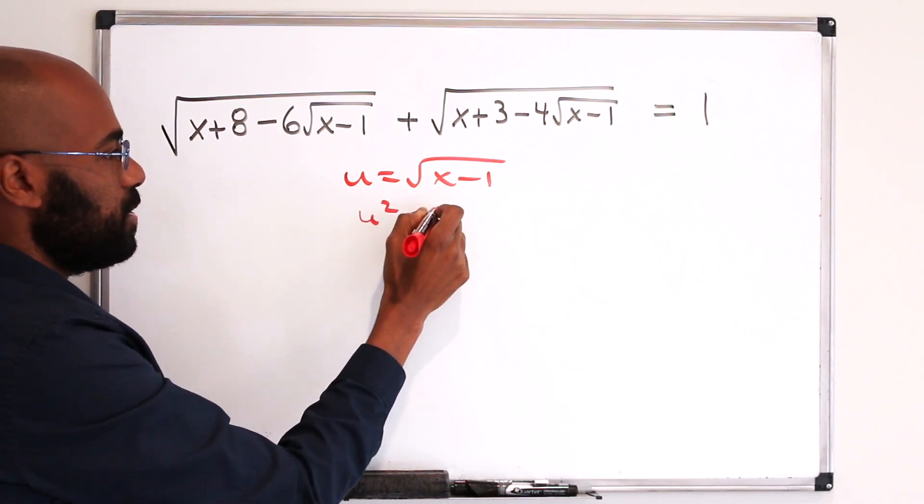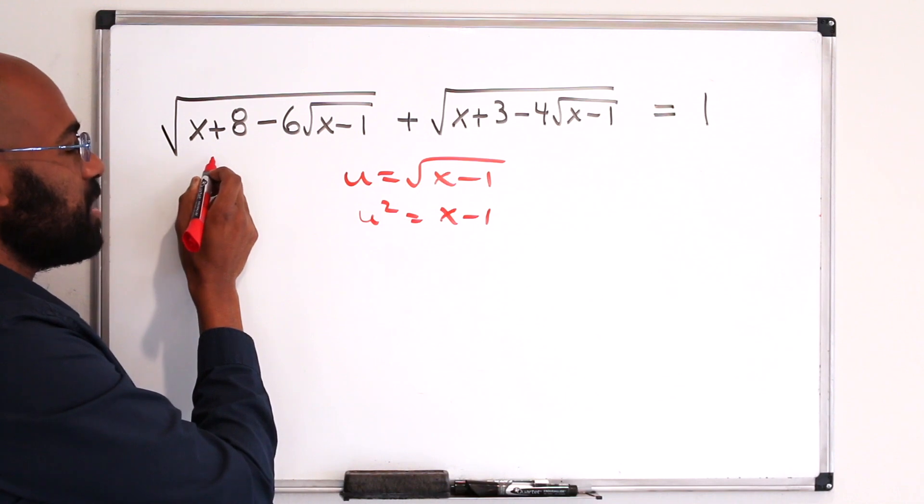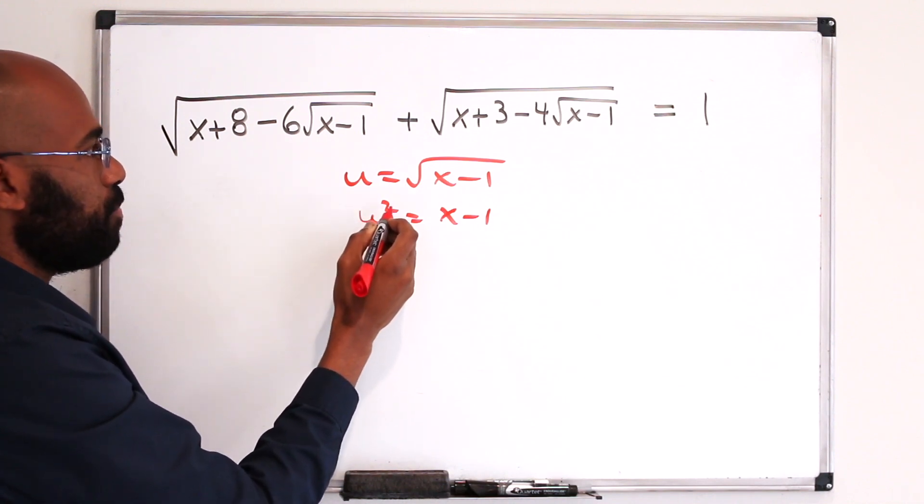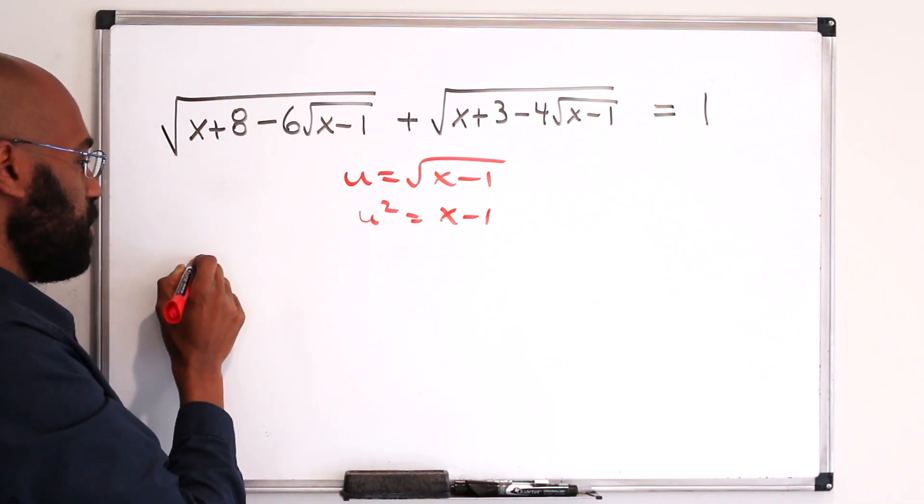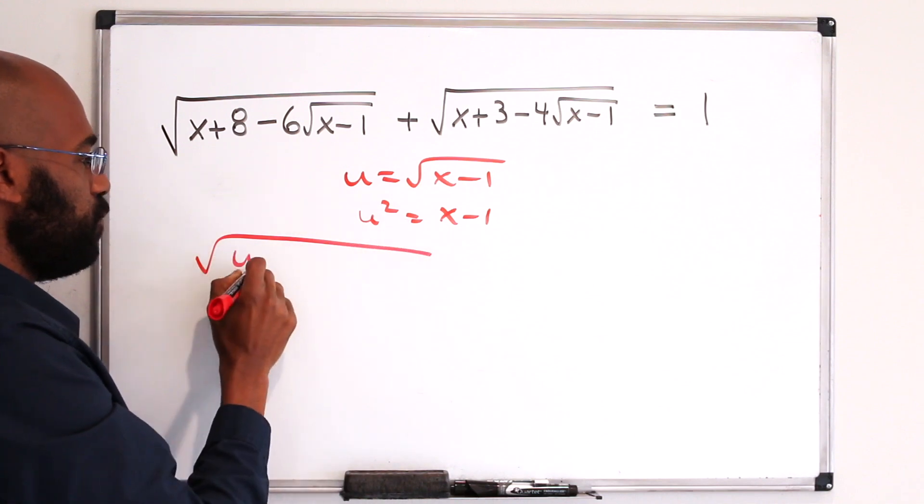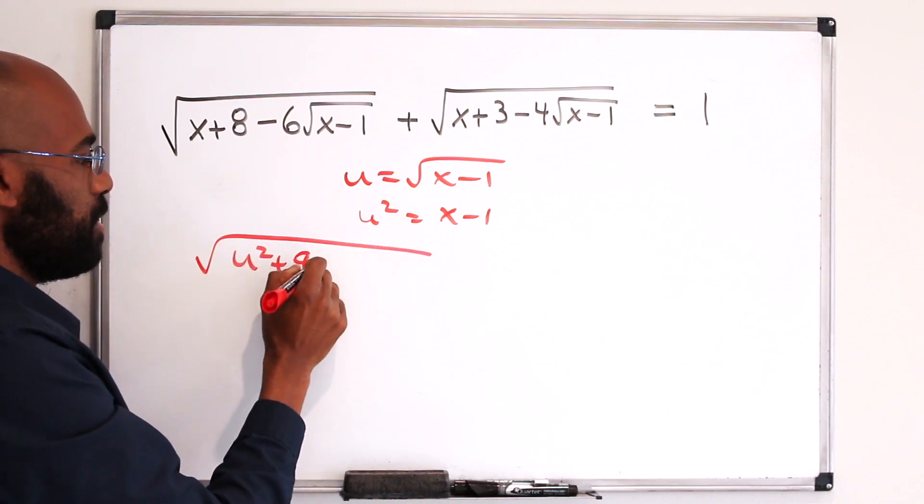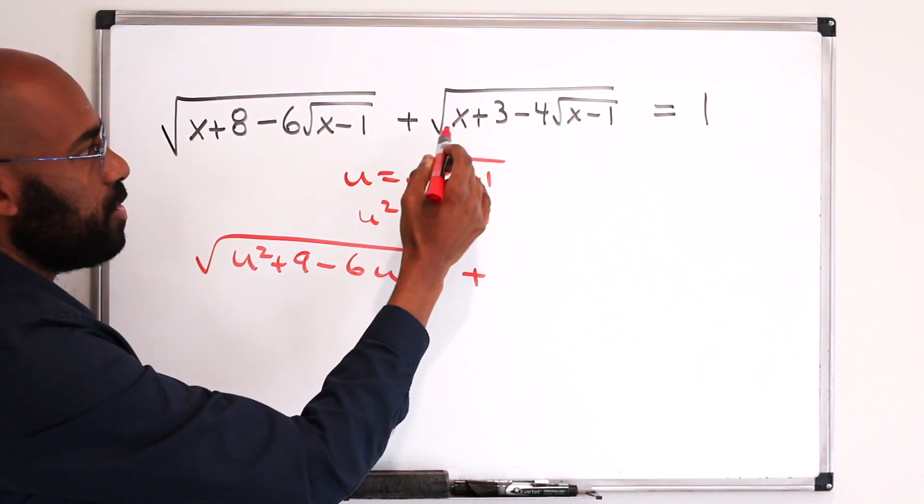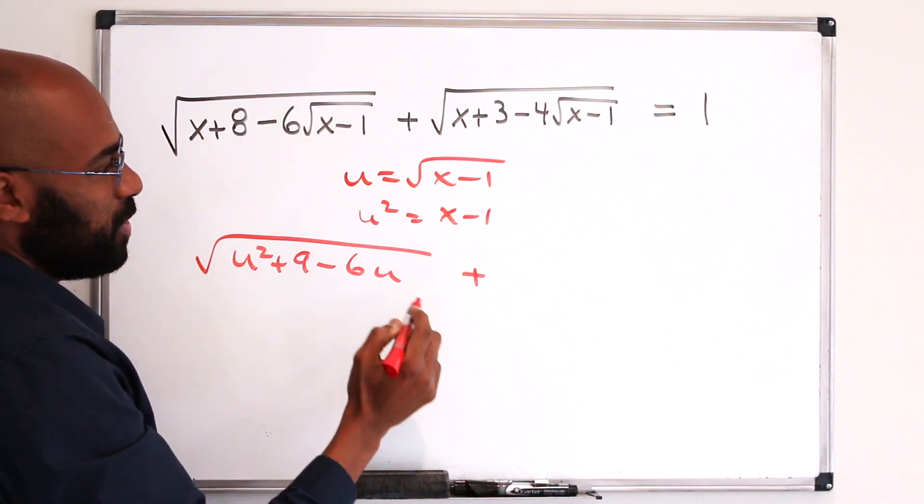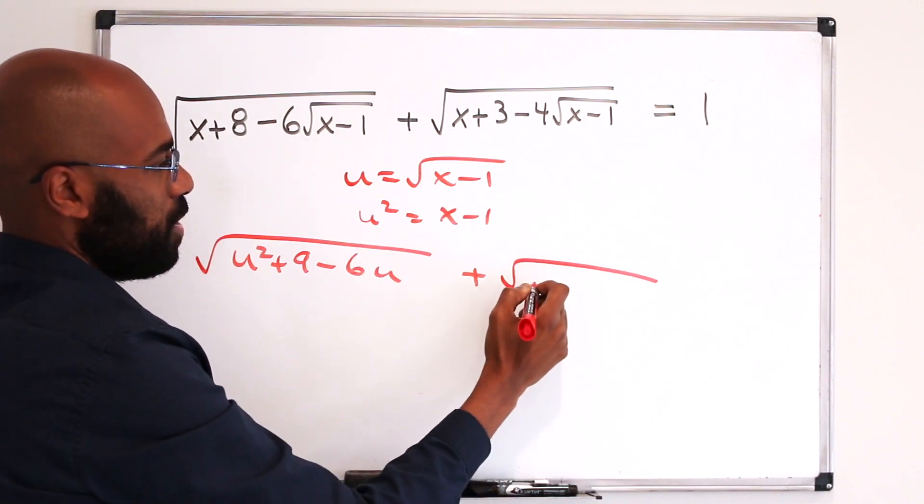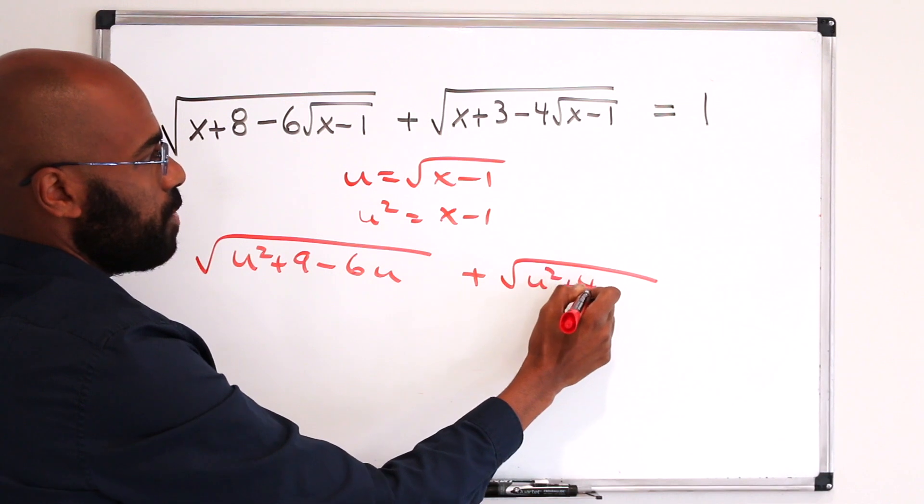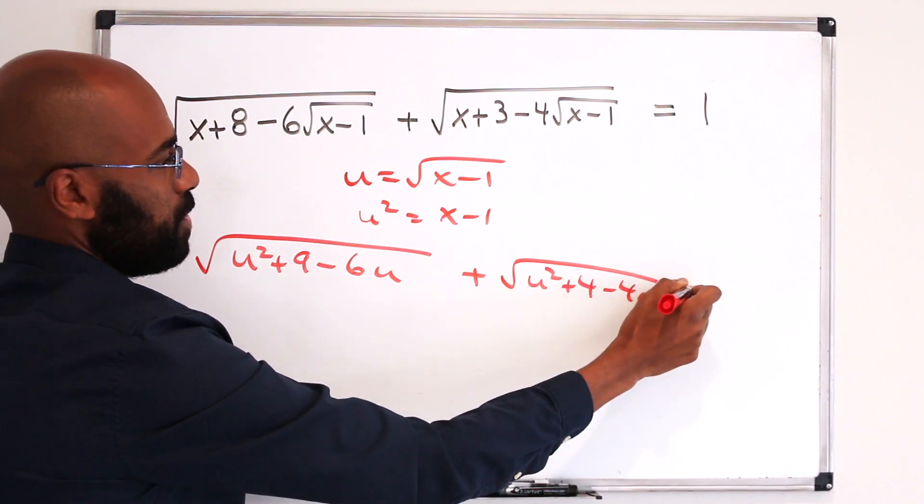u squared is x minus 1, so x plus 8 is u squared plus 9. So here, we have the square root of u squared plus 9 minus 6u. And here, x plus 3 is u squared plus 4, so we have the square root of u squared plus 4 minus 4u, equaling 1.